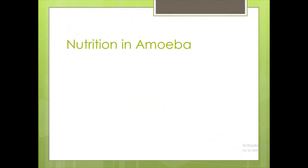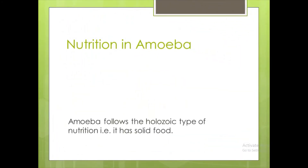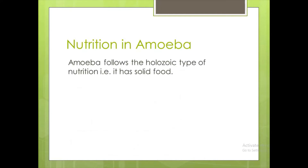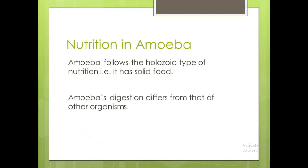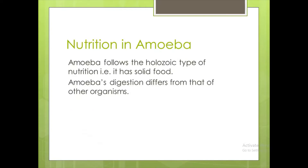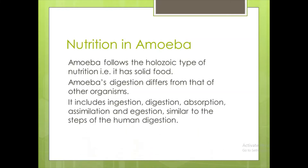Nutrition in amoeba. Amoeba follows the holozoic type of nutrition, i.e., it takes in solid food. Amoeba's digestion differs from that of other organisms. It includes ingestion, digestion, absorption, assimilation, and egestion — similar to the steps of human digestion.